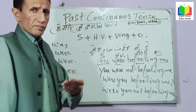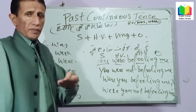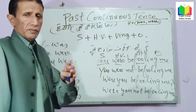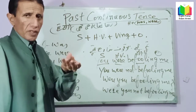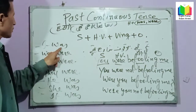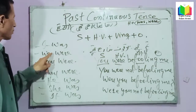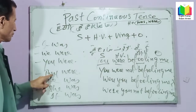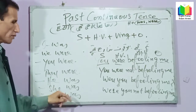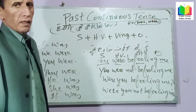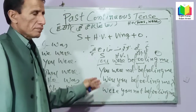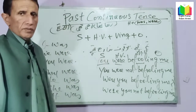Now I have written some helping verbs which follow the subjects or pronouns: I — was; We — were; You — were; They — were; He — was; She — was; It — was. So these are the helping verbs which follow the pertaining pronouns.